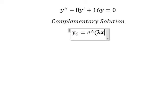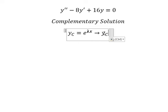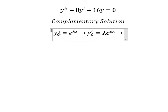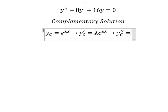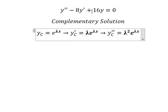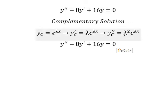If we do the first derivative of yc, we have lambda e to the power of lambda x, because when we differentiate e to the power of lambda x, we keep the same term and then take the first derivative of lambda x, giving us lambda. Now we do the second derivative, which gives us lambda squared e to the power of lambda x.